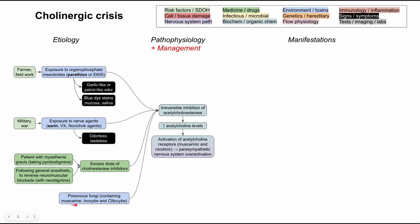Less commonly, poisonous fungi containing muscarine — the Inocybe and Clitocybe genera — can also cause a cholinergic crisis. Even less common is nicotine poisoning, which directly activates the nicotinic receptor rather than affecting acetylcholinesterase levels. This might occur in a child who has swallowed cigarette butts. Not all manifestations will be present since only the nicotinic receptor is activated, not both muscarinic and nicotinic, but some symptoms can still occur.